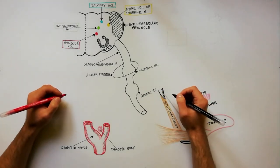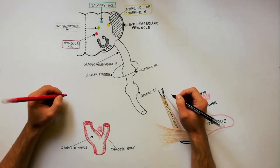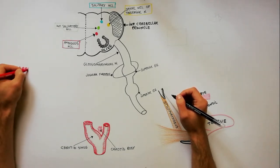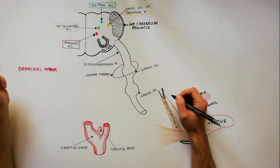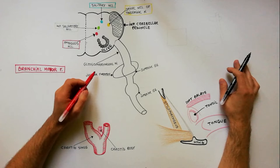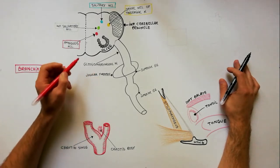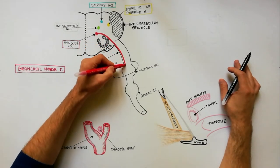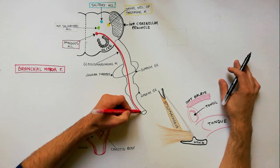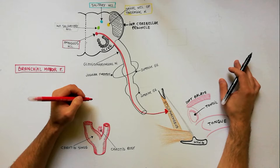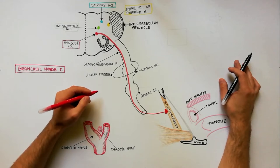The glossopharyngeal nerve carries different types of fibers, which we will indicate as follows. With the red color we will indicate the branchial motor fibers. The motor neurons for these fibers are located in the rostral part of the nucleus ambiguus. Axons from these neurons are carried within the glossopharyngeal nerve to innervate the stylopharyngeus muscle — the only muscle innervated by the glossopharyngeal nerve.